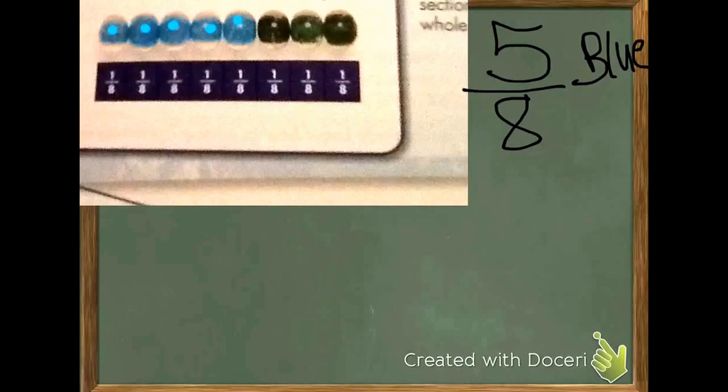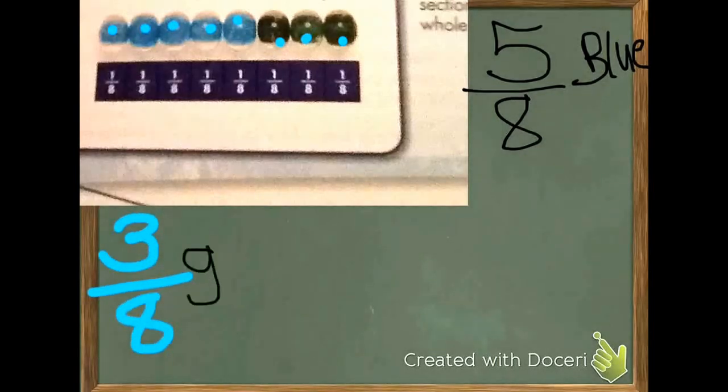Let's say I want to know how many of the beads are green. So I would count the green ones, one, two, three. So I would say three-eighths of the beads are green.